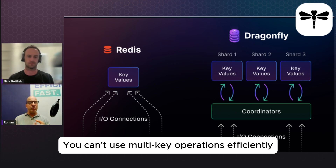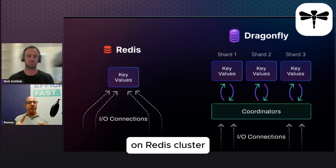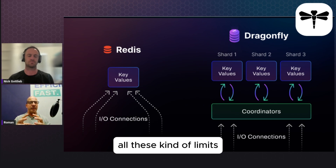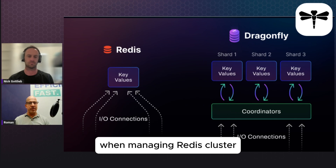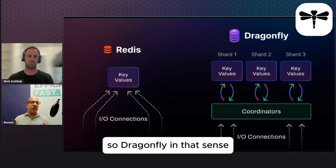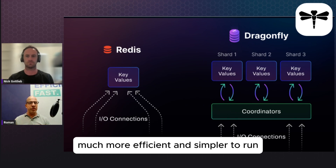You can't use multi-key operations efficiently on Redis Cluster. All this limits and creates lots of complexity when managing Redis Clusters. So Dragonfly, in that sense, is much more efficient and simpler to run.